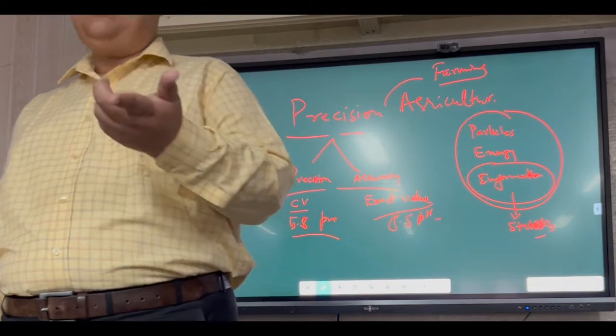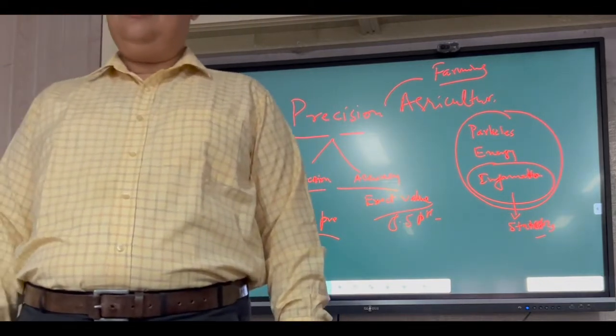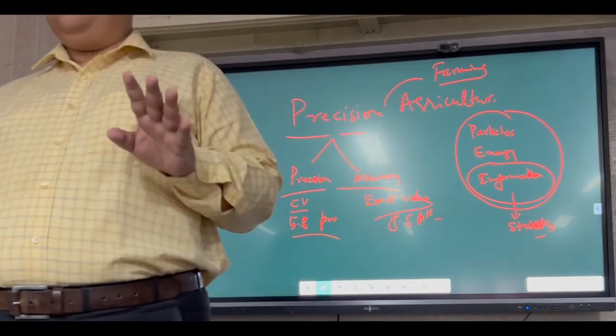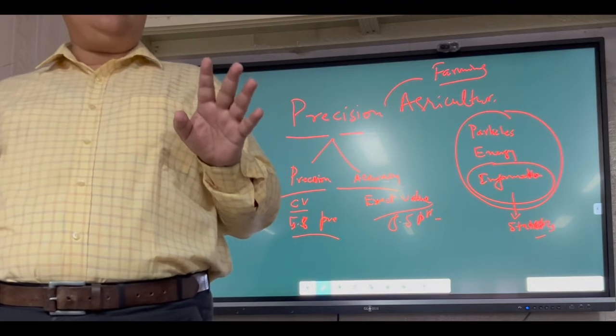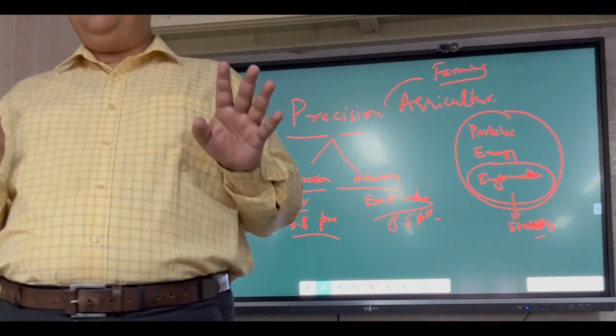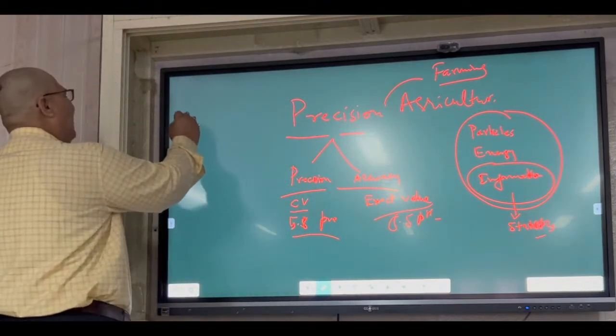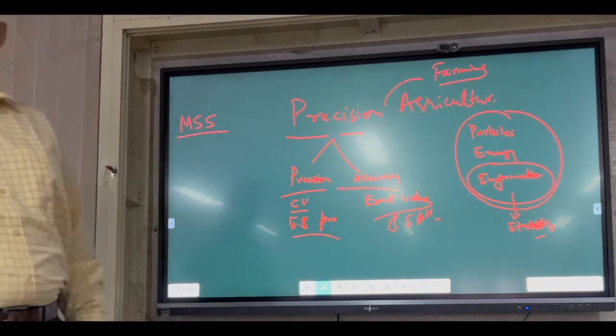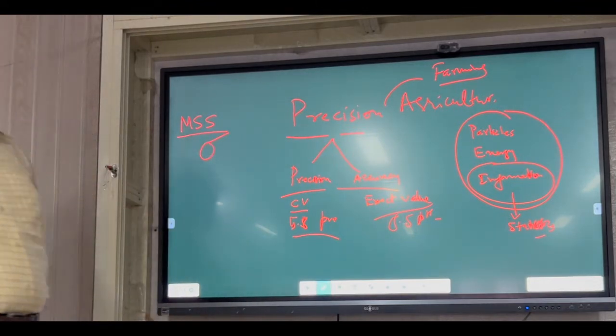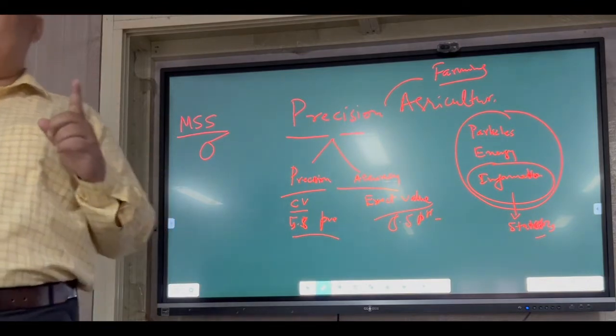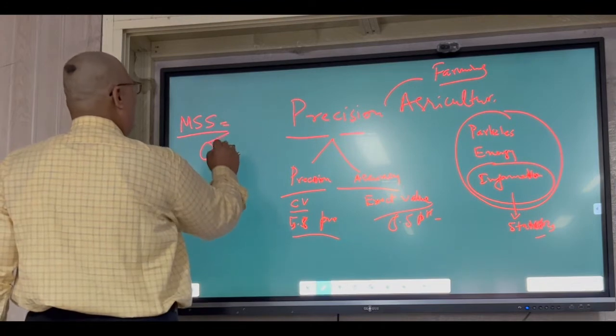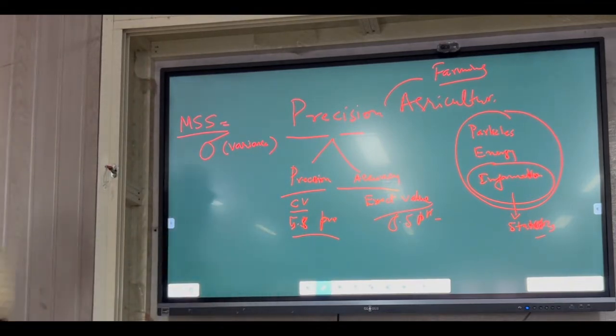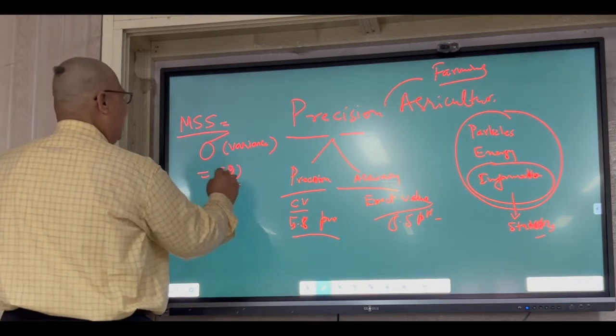What is the statistics? In statistics, what do you mean by precision? Mean sum of square is equal to variance. Variance is equal to Sb ka whole square.